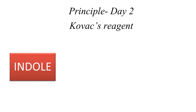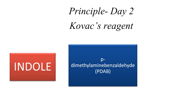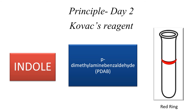Kovac's reagent is added to the medium on the second day. The Indole formed by the reaction will react with para-dimethylaminobenzaldehyde, which is present in Kovac's reagent, to give a red colored ring. This red colored ring indicates a positive reaction for the Indole test.